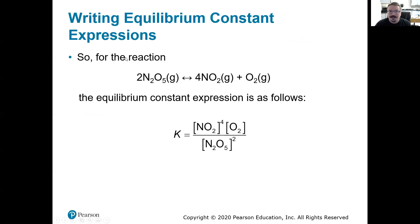Writing equilibrium constant expressions. What does that look like in a real reaction? Here we go. 2 N2O5 gives us 4 NO2 and 1 O2, and we can just write that out like that.